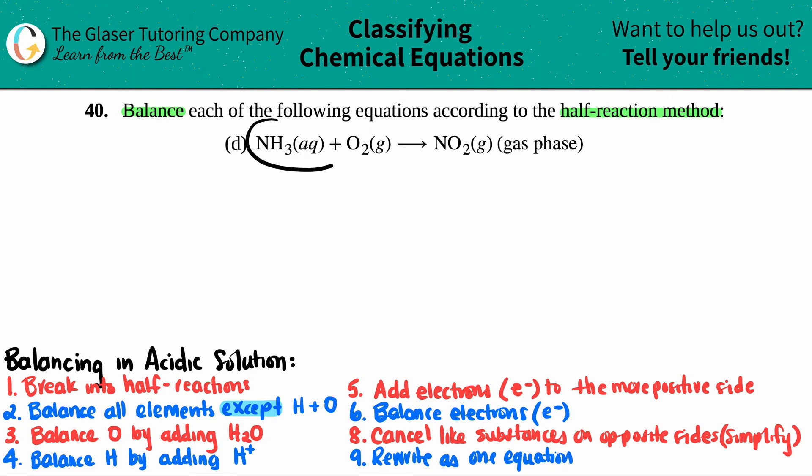So in this case, we have to balance NH3, ammonia, which is aqueous, plus oxygen, O2, yields NO2 gas, and this is in the gas phase.